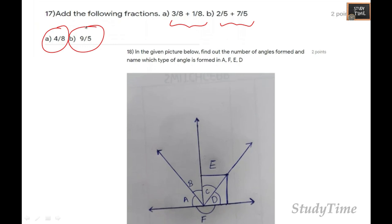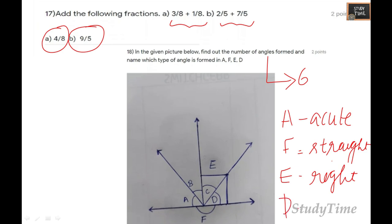In the given picture below, find out the angles formed and name which type of angle is formed at A, F, E, D. Find the number of angles: A, B, C, D, E, F, so 6 angles formed. For A, it is acute angle. For F, it is straight angle because it is 180 degrees. For E, it is right angle. For D, it is acute angle.